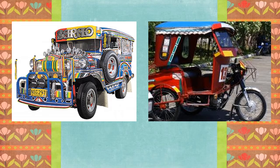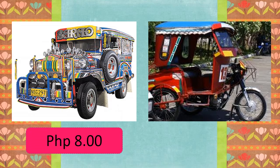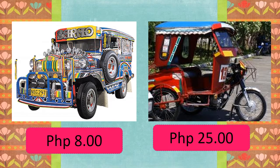Let's start our lesson with this problem. Your mom needs to go to the supermarket. There are two ways of going to this place — one is riding a jeepney and the other one is riding a tricycle. How much fare was paid for the jeepney and the tricycle? The fare for the jeepney is 8 pesos. The fare for the tricycle is 25 pesos. Which fare is more? It's the tricycle. Which fare is less? It's the jeepney. How would you compare the fares?